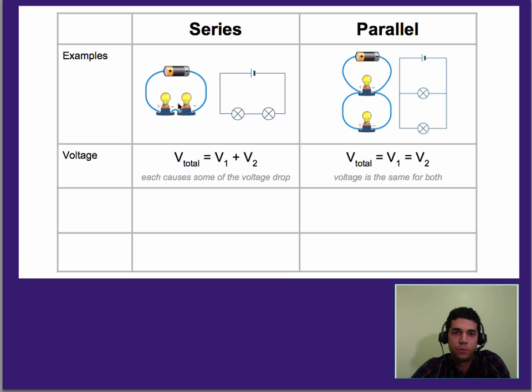For voltage, when we have things in series, the total voltage is equal to the voltage drop over the two things combined. When we have things in parallel, each one gets the total voltage, so all of those are equal.